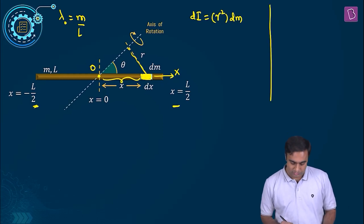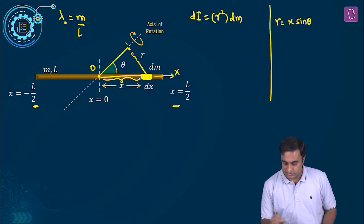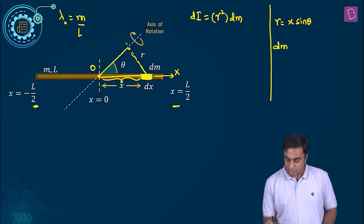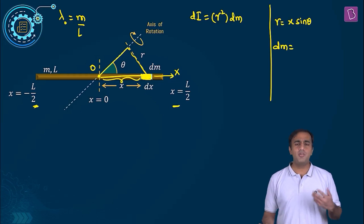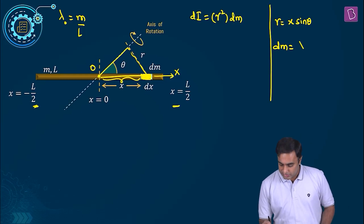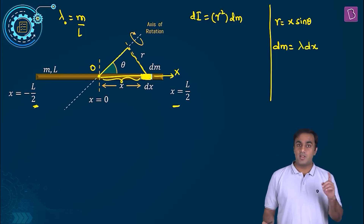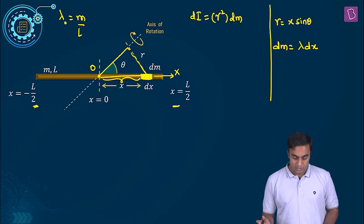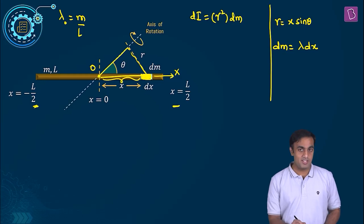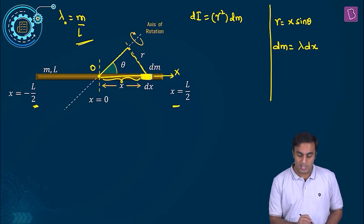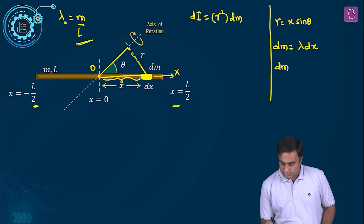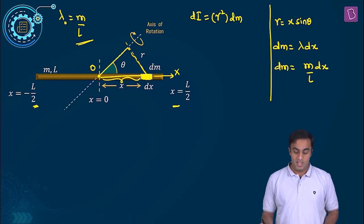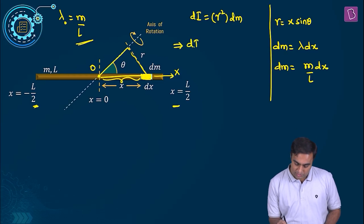We also know from this triangle that R is x sin theta. What is the expression for the mass of the differential element? You write it as lambda into dx, linear mass density into the length of the differential element. We know that the linear mass density or the mass per unit length happens to be m by L. So substituting that, we get m by L into dx. Now substitute all these values into the expression.